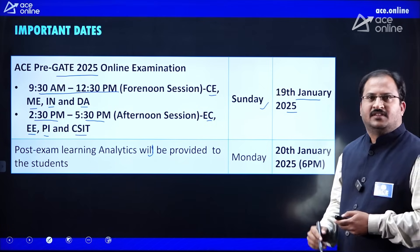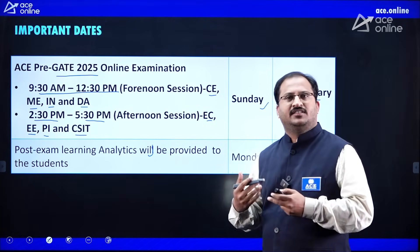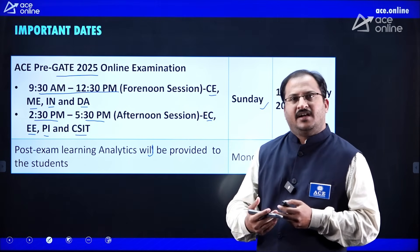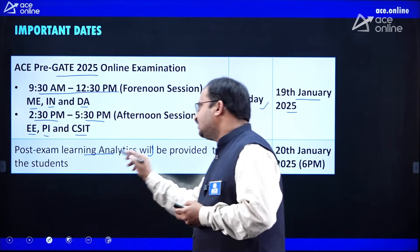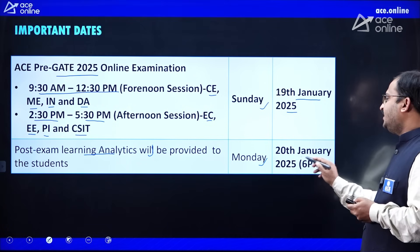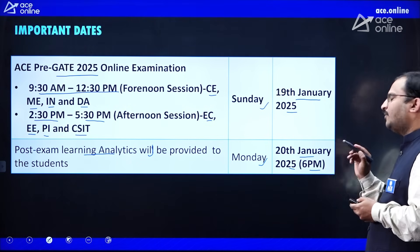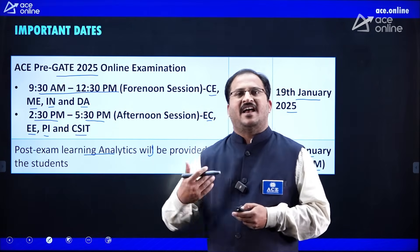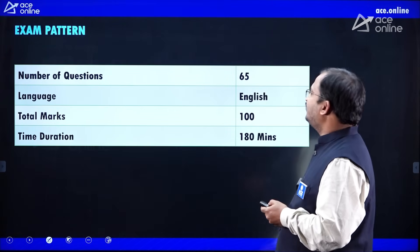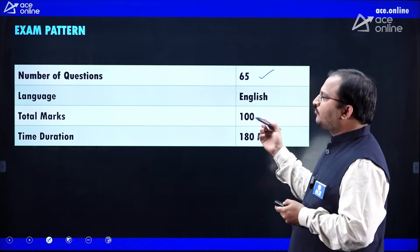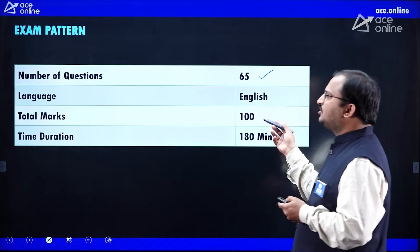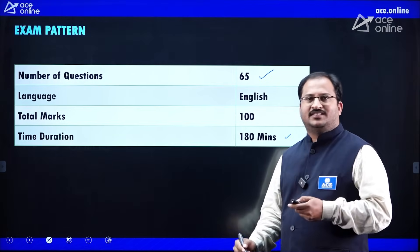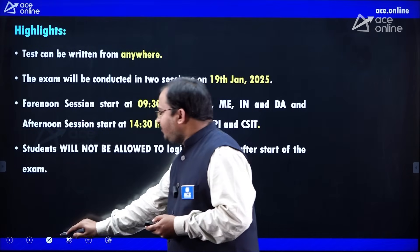Aspirants who have written this examination and want to see their All India Ranking and post-exam learning analytics can do so on Monday, 20th January 2025, from 6 PM onwards. Coming to the pattern of the examination, as you all know, the GATE examination contains 65 questions — the same number will be here. The language will be English, total marks will be 100, and the time duration is 180 minutes.